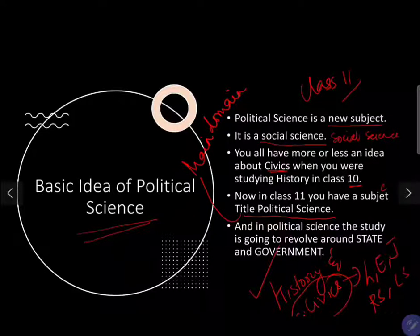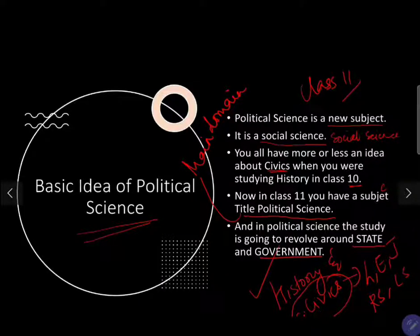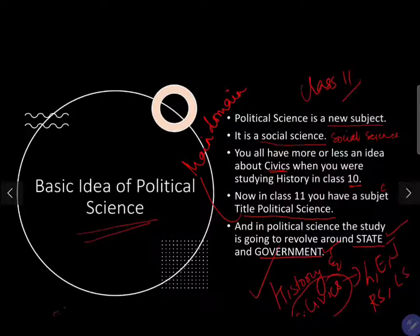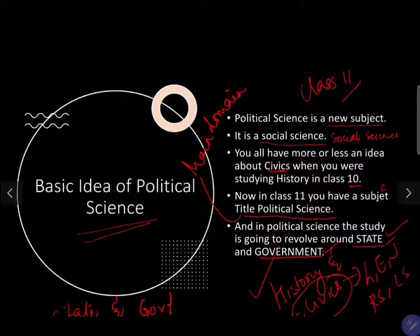Political science is now the main domain in class 11. In political science, the study is going to revolve around state and government. You need to be very clear about this: political science is a subject which revolves around state and government. Every aspect will revolve around state and government, as this is the most important part we will be discussing in every chapter.